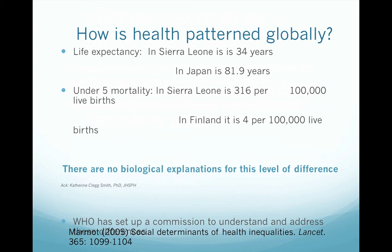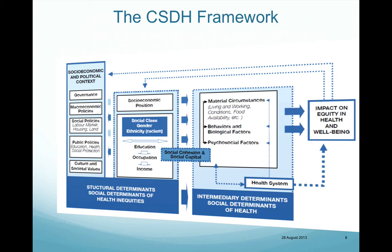The WHO set up in 2005 a Commission to understand and address social determinants of health inequalities. That group — the Commission for Social Determinants of Health — produced a framework that helps put into perspective the different lines of inequity contributing to varying health outcomes between different groups or countries. They grouped these determinants into structural determinants, which affect intermediary determinants, which in turn affect health outcomes. Structural determinants are the macro socio-political and economic environment affecting your chances of access to health care, education, and how you may be treated as a woman or an immigrant in society.